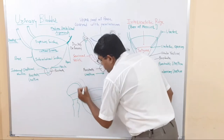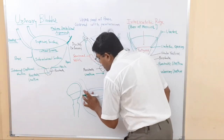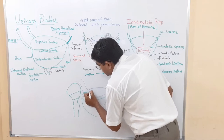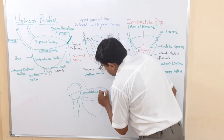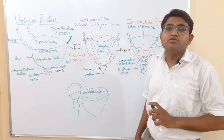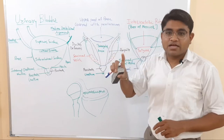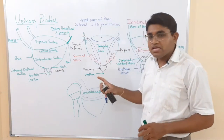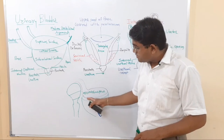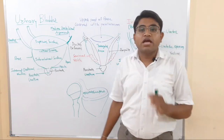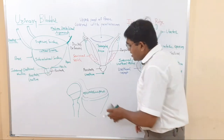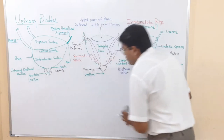In females, the peritoneum covers the isthmus of the uterus and forms a pouch known as the vesico-uterine pouch. Just as in males the recto-vesicular pouch separates the bladder base from the rectum, in females the vesico-uterine pouch on the posterior part of the superior surface separates the bladder from the uterus.